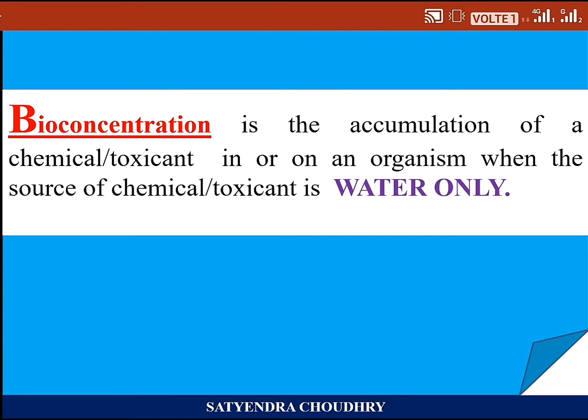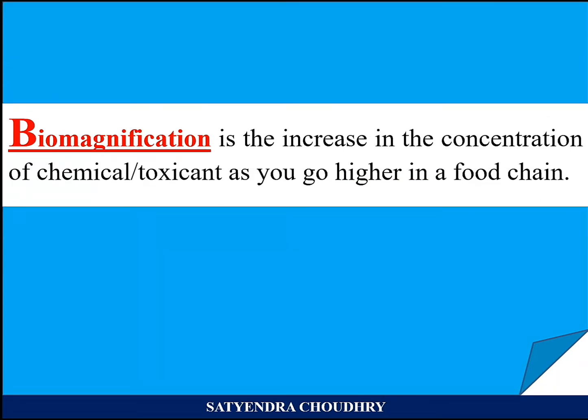Bio magnification is a process in which the concentration of a chemical or toxic substance in an organism increases with increasing trophic levels — meaning the higher the trophic level, the higher the toxic substance in that organism. Mercury is an example of a substance which can be bio magnified within the food chain.